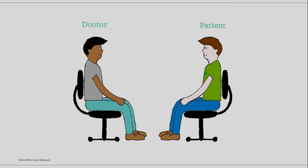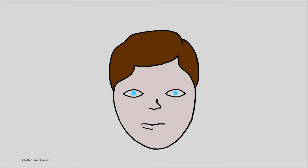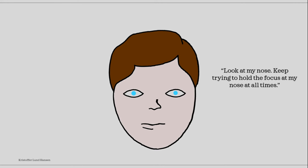We'll start with how to perform the test itself. The first thing you have to do is to sit down with the patient straight in front of you. Then tell your patient to look at your nose. He or she should be instructed to try to keep their vision at your nose at all times.